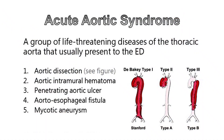Acute aortic syndrome is a group of life-threatening diseases of the thoracic aorta that usually present to the emergency department. The syndrome consists of three distinct pathologies, including acute aortic dissection, intramural hematoma, and penetrating aortic ulcer. In addition, it also includes aortoesophageal fistula and mycotic aneurysm.